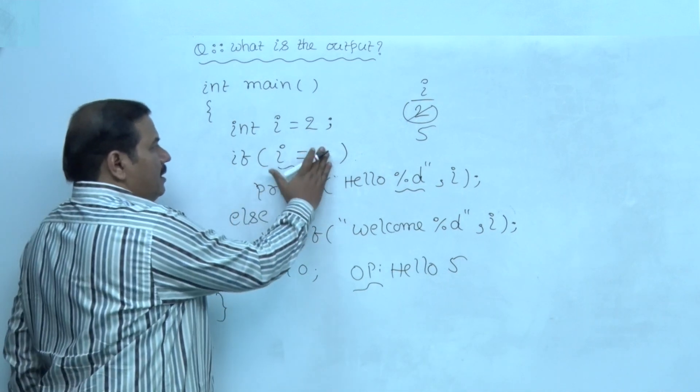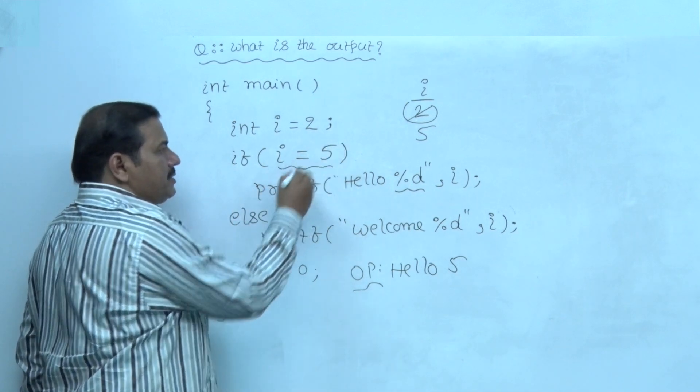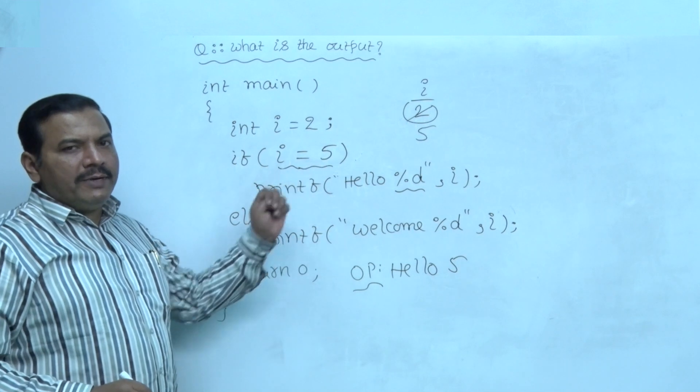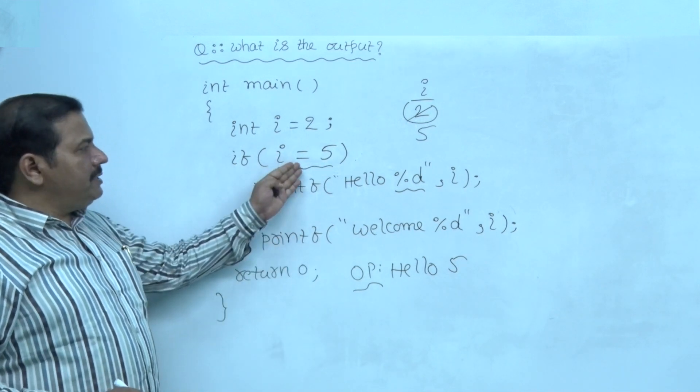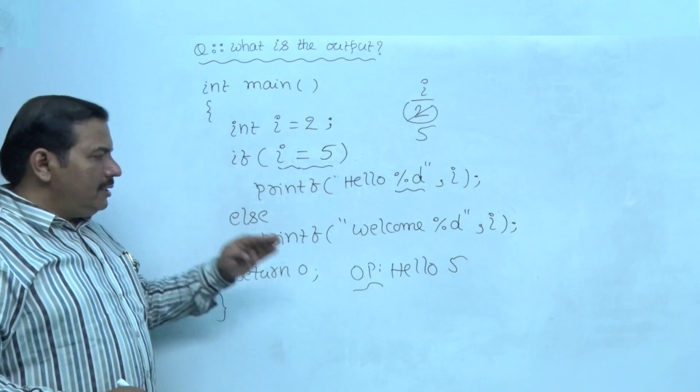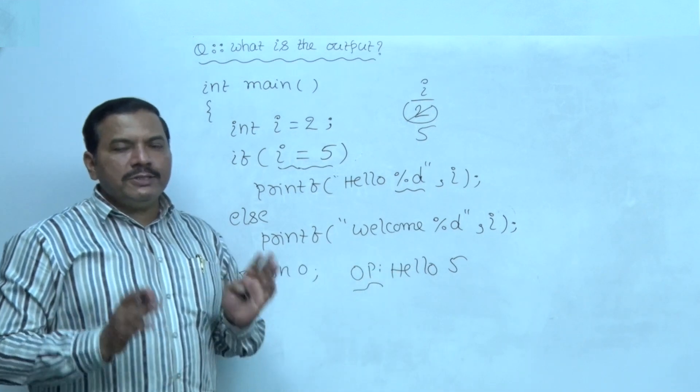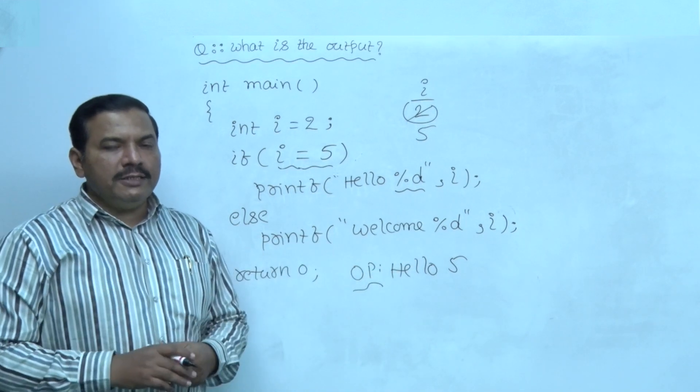So, anyway, our actual question is i assignment 5. If it is the test expression, the final output of this code is hello 5 is the result.